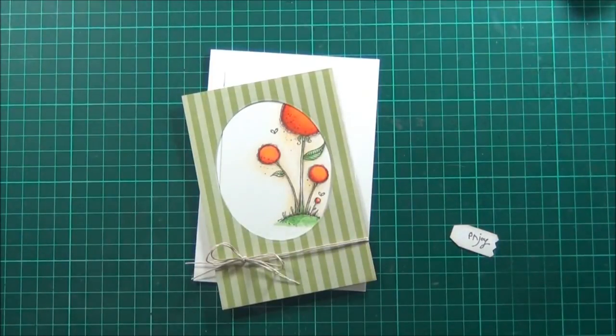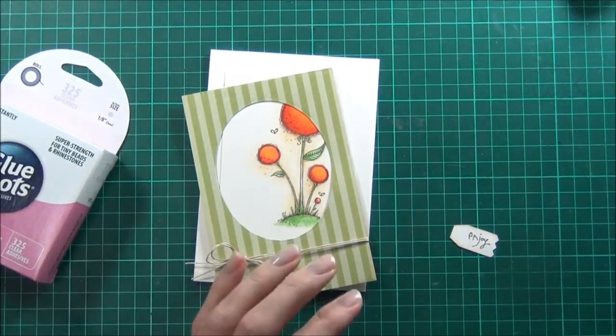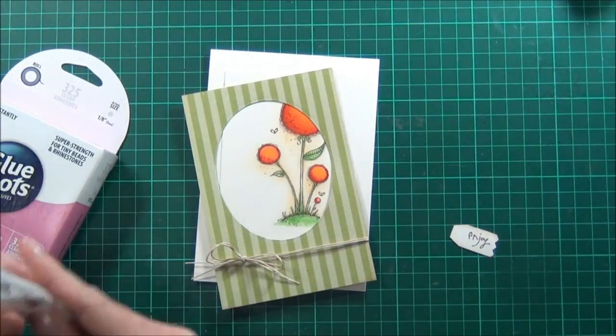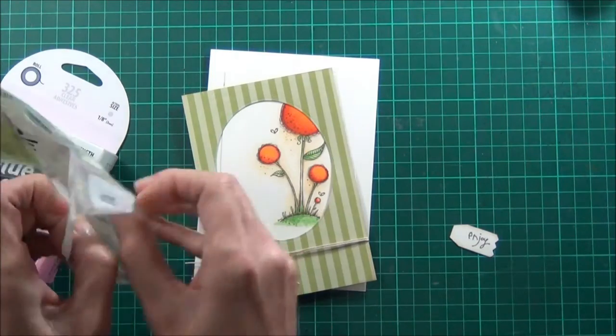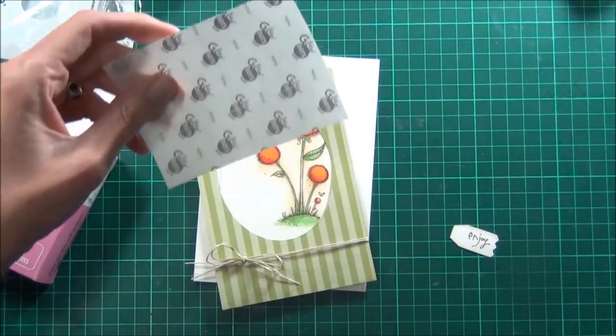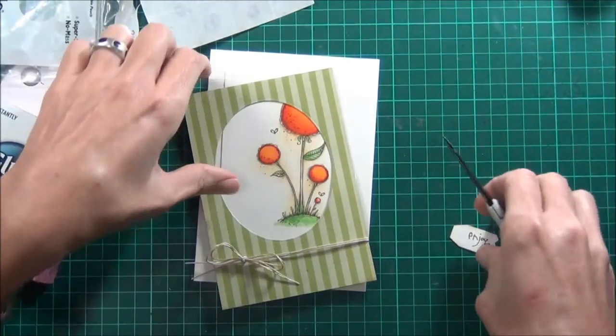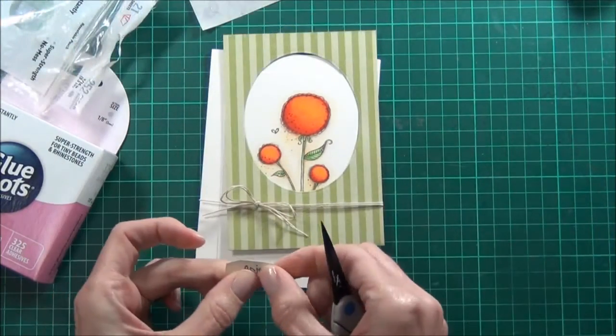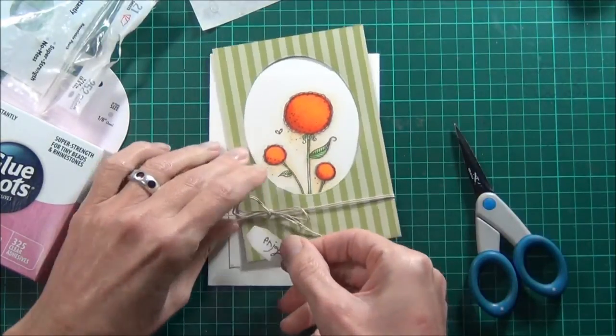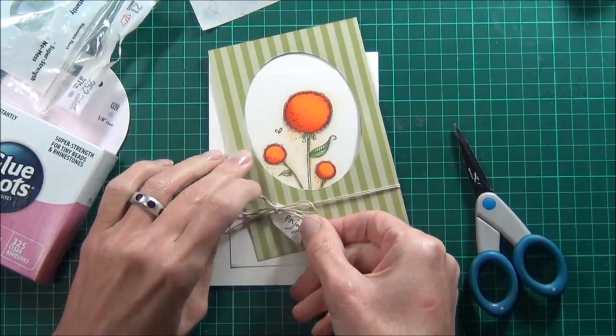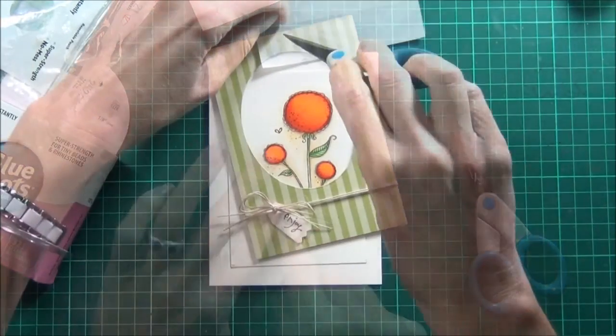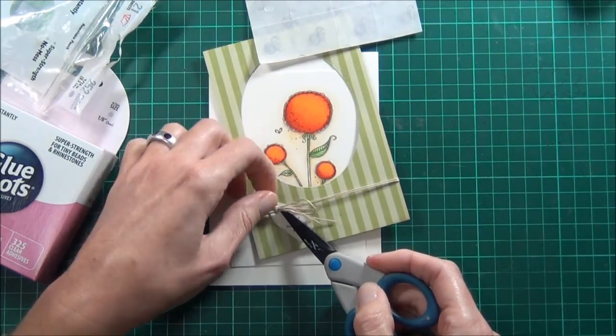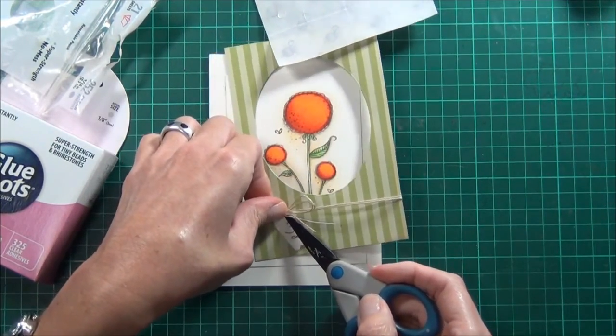I like to secure my bows with glue dots. Because I've got the tag there, I'll use that to tuck that in as well, so I can just put that glue dot right underneath where the bow's been tied.